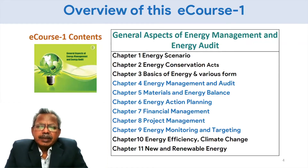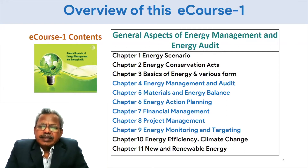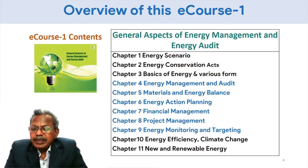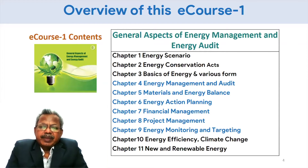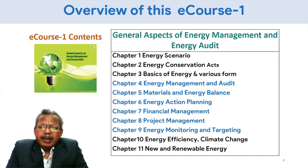Chapter seven deals with financial analysis techniques such as payback period, ROI, internal rate of return (IRR), and net present value (NPV) methods. You will learn how to select the most profitable energy saving options through project management. It also deals with networking techniques like the Critical Path Method (CPM) and PERT, very useful for implementation of energy saving projects in an industry.